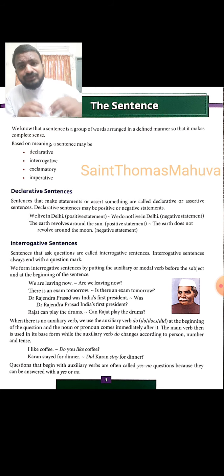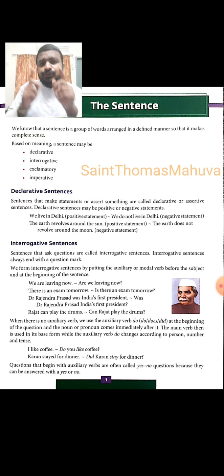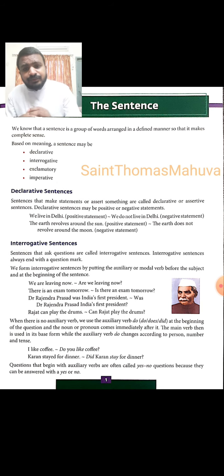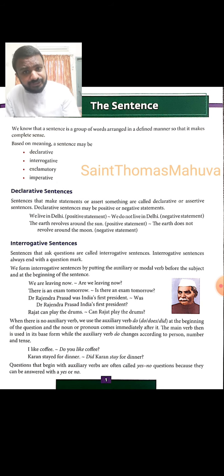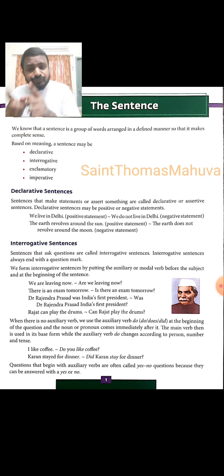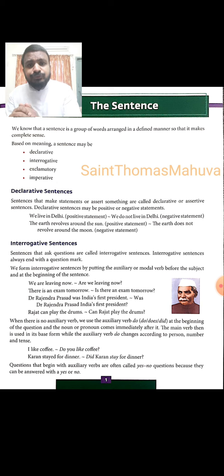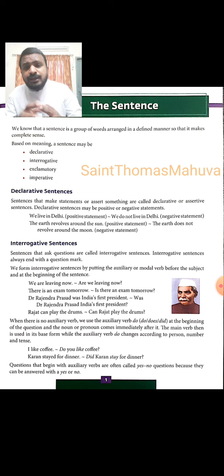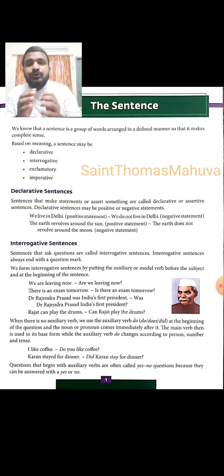Since there is no auxiliary verb in 'I like coffee,' we put the auxiliary verb: 'Do you like coffee?' Then look at the next sentence: 'Current stayed for dinner' becomes 'Did Current stay for dinner?' Since that sentence is in the past tense, we use 'did' — the past form of 'do.' Questions that begin with auxiliary verbs are called yes/no questions because they always give us the answer yes or no.